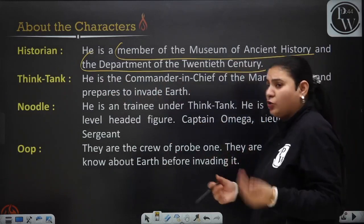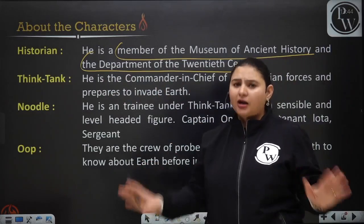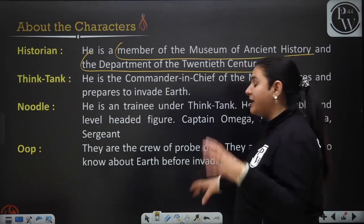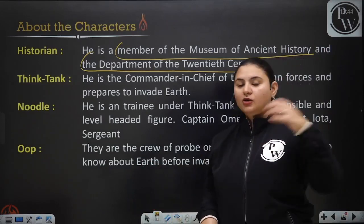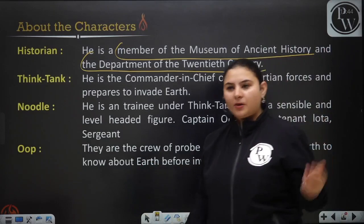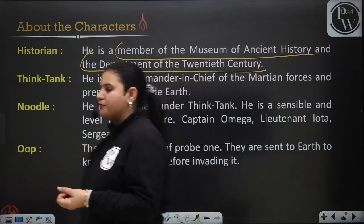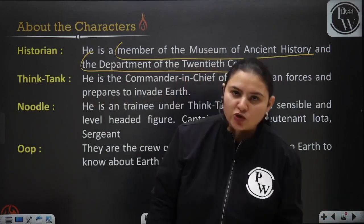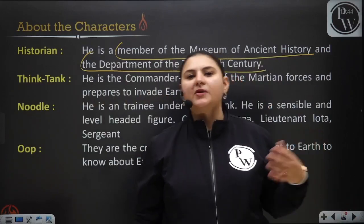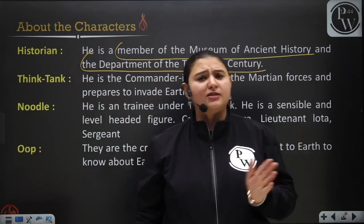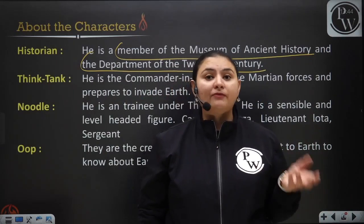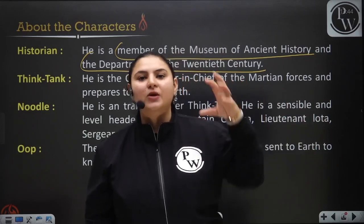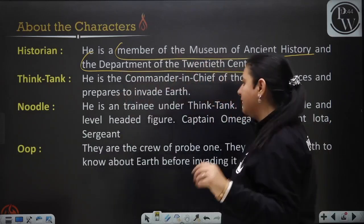Then we talk about Think Tank. He is the commander-in-chief of Martian forces and he prepares to invade Earth. His purpose is to find all information about Earth in one day and then attack, because according to him, Earth is very primitive — not advanced like Mars — and it would be very easy to take control of Earth.